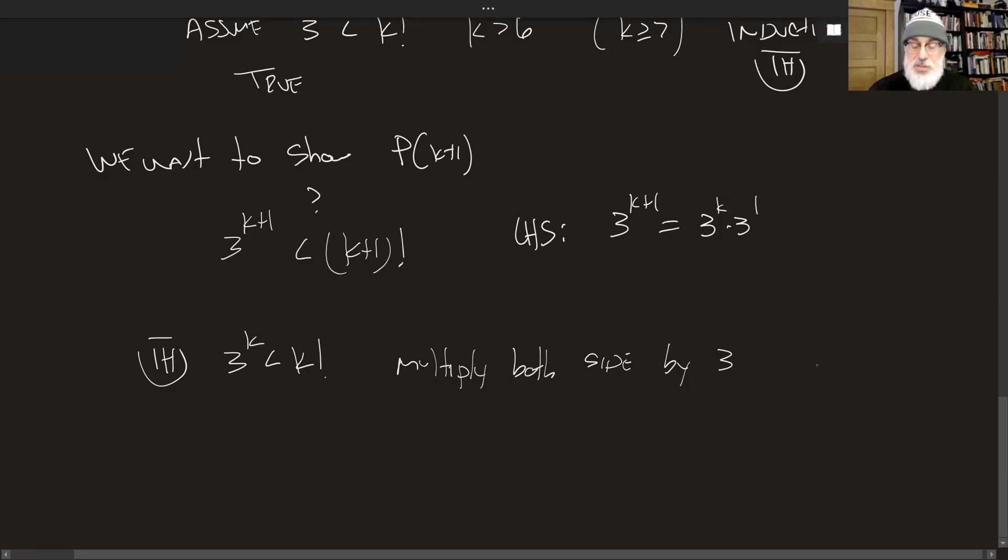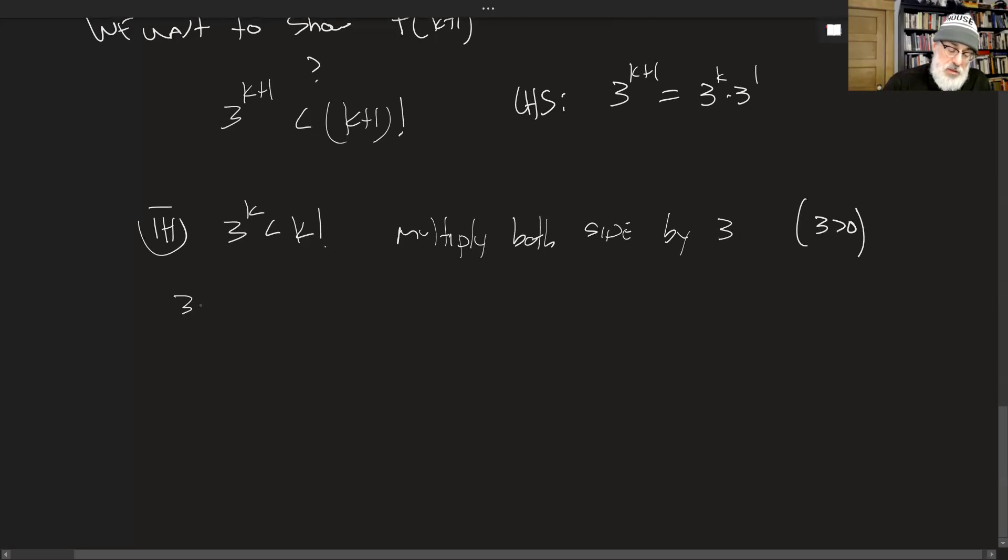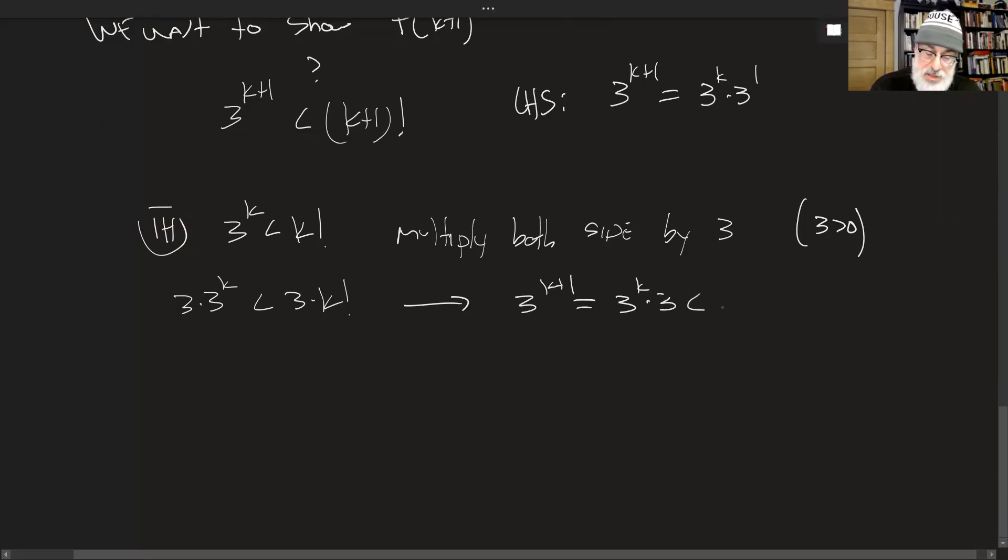Now multiply both sides by 3. We can do this, obviously, because 3 is greater than 0. It does not affect the inequality at all. So let's multiply. 3 times 3^k is less than 3 times k factorial. It's true because the induction hypothesis, multiplying by 3, does not affect that inequality. And so notice that 3^(k+1) is equal to 3^k times 3^1. And that's going to be less than 3k factorial. So again, we're building this inequality.